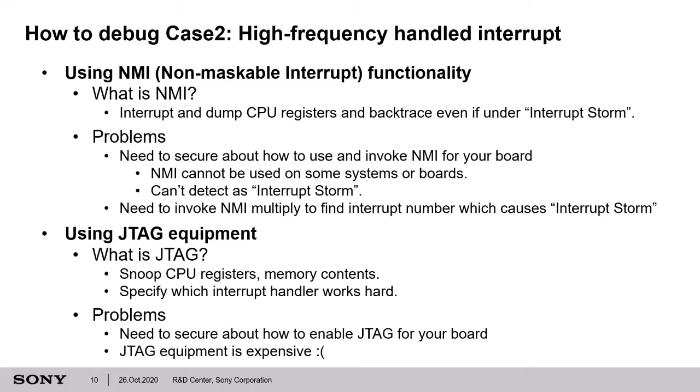Another way to debug high-frequency handled interrupts is to use JTAG. JTAG can confirm CPU registers and memory contents, and with this we can work out which interrupt handler is running often. But JTAG also has some problems — some development boards don't have JTAG interfaces, and when they do, we need to prepare config files and that can take a long time. In addition, JTAG equipment is a little bit expensive.